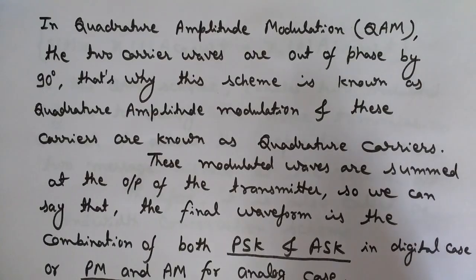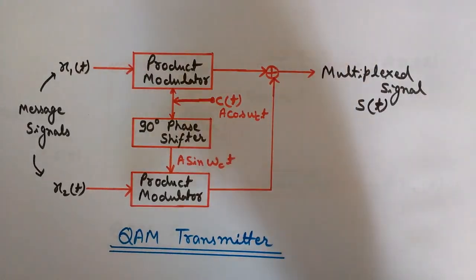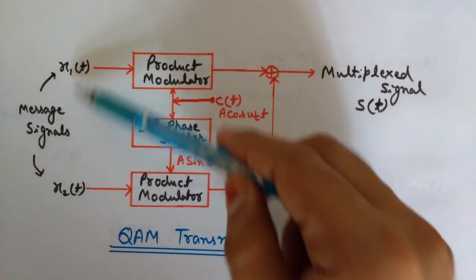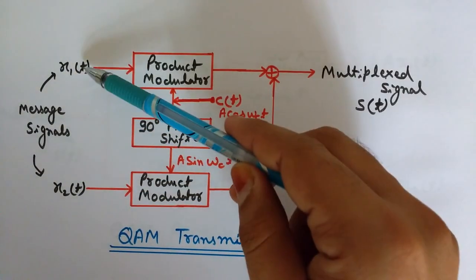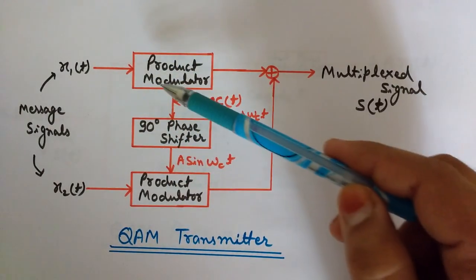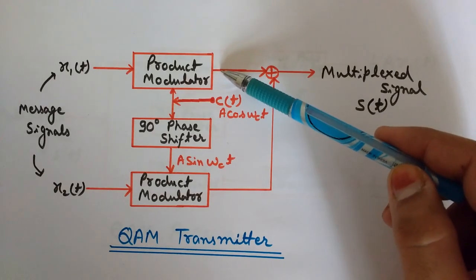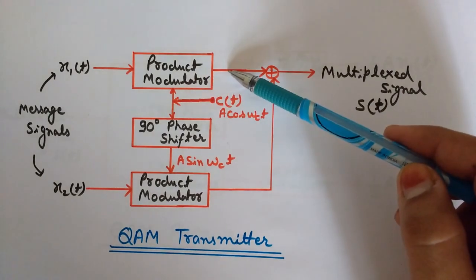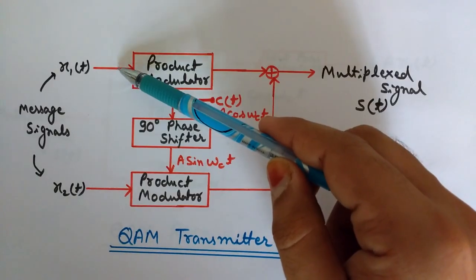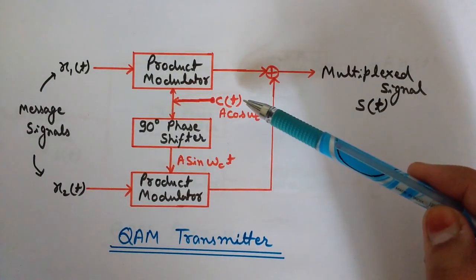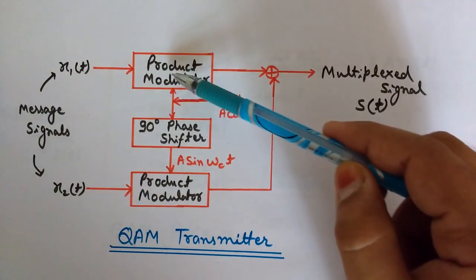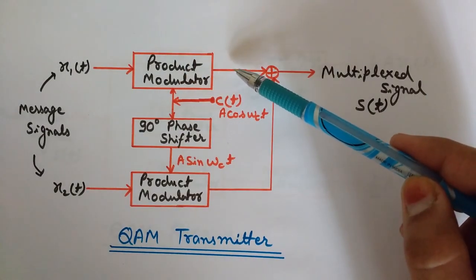Let me show you this with the help of a block diagram. Look at this block diagram of the QAM transmitter. Here we have two message signals X1(T) and X2(T) — these are analog messages. We are using two product modulators. The output is an amplitude modulated wave, because the inputs to the product modulator are the analog message signal and the carrier wave A·cos(ωc·T).